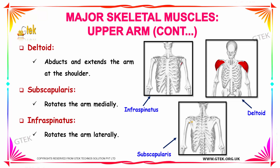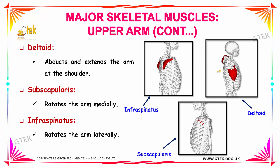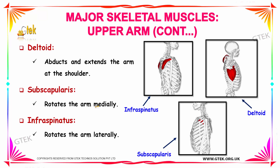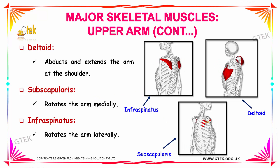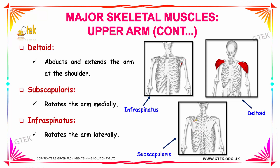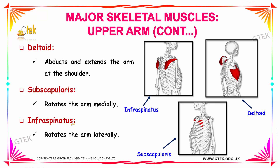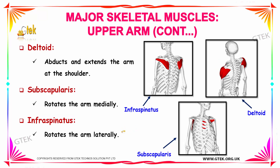A few more muscles located in your upper arm region include the deltoid muscle. It abducts and extends the arm at the shoulder and is located on either side of a person's shoulder. Next we have the subscapularis, located near the scapula bone. It rotates the arm medially and is located inside the scapula bone. Whereas your infraspinatus muscle is located over the scapula bone and it rotates the arm laterally.